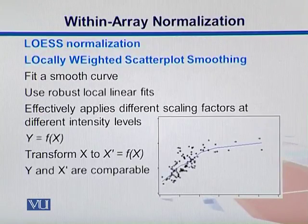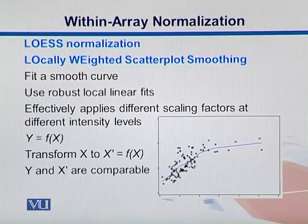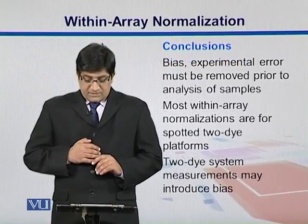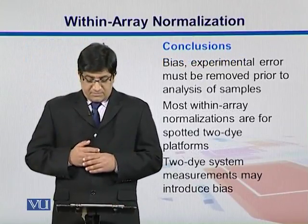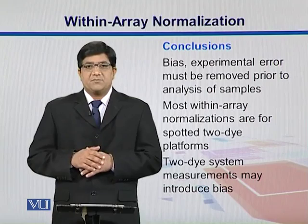Another normalization procedure is LOWESS normalization, which stands for Locally Weighted Scatter Plot Smoothing. We fit a smooth curve using a robust local linear fit. Since this involves linear regression and intensive statistical tests, you fit a line across the data points and try to transform them so they come close to that best fit line. In summary, biases and experimental errors must be removed, and most within-array normalizations are for spotted two-dye experiments.